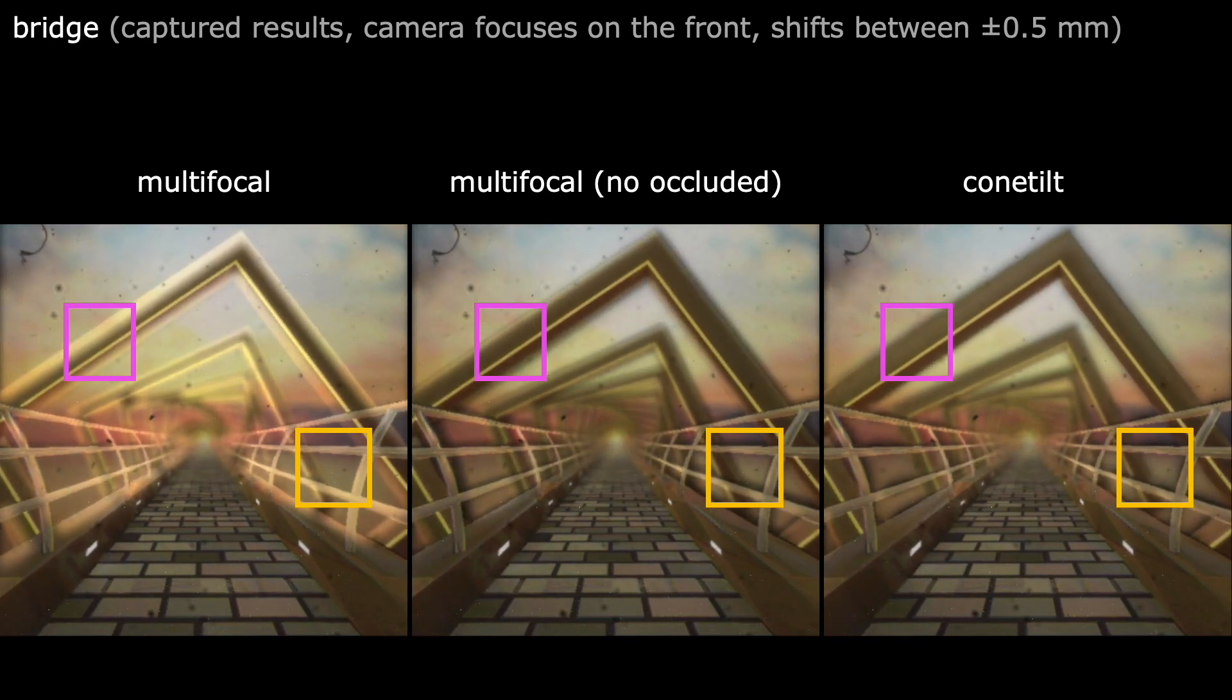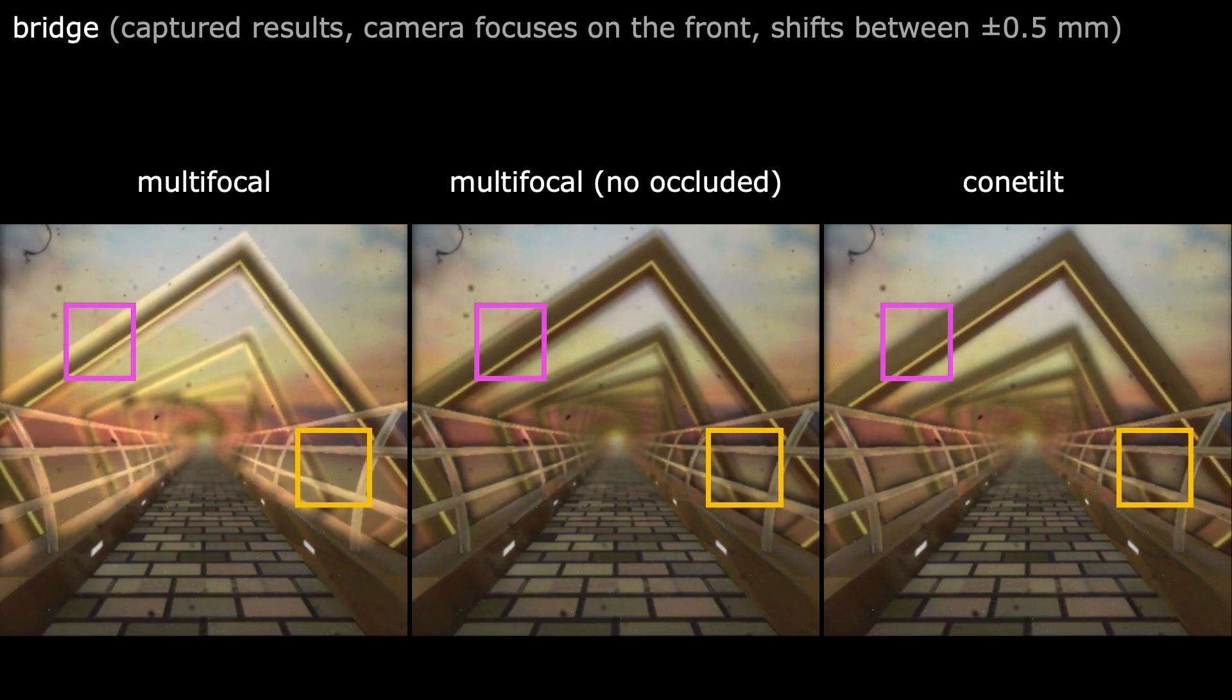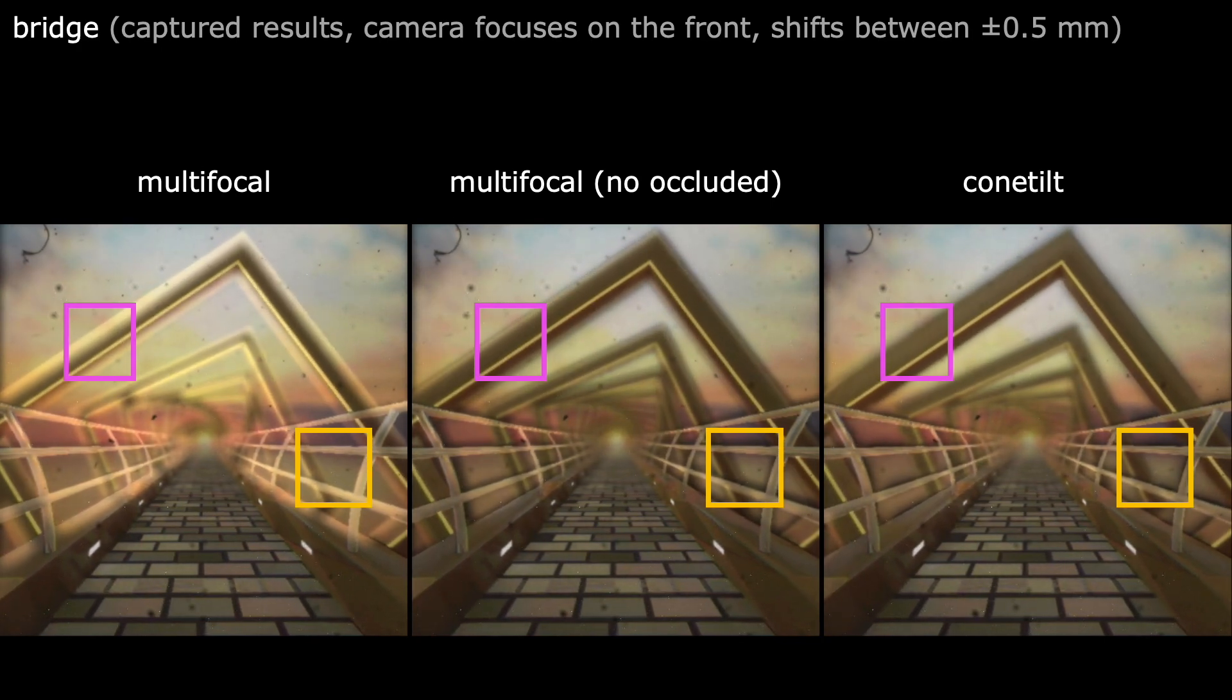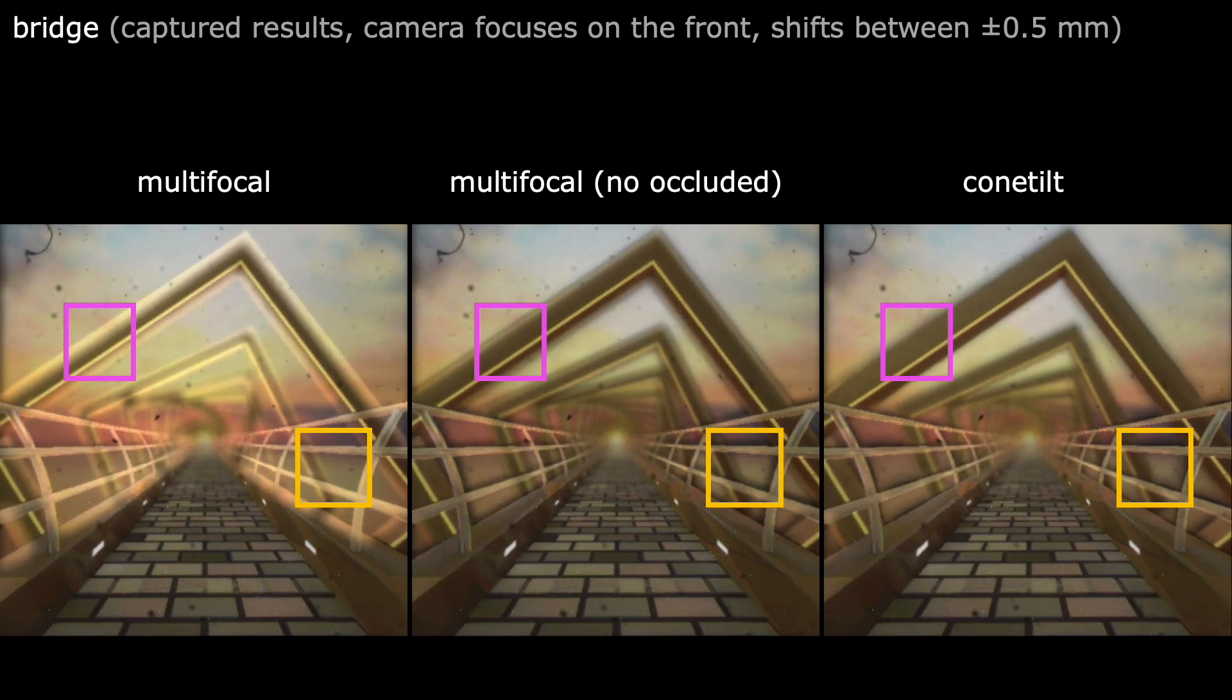We want to use this result to point out one of the limitations of ConeTilt displays. As shown in the yellow inset, ConeTilt displays create dark halos near occluding boundaries, and fail when occluding objects are too close.